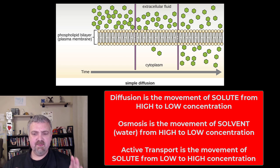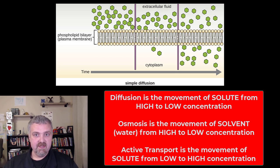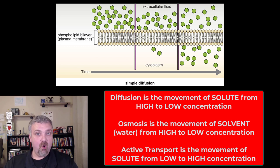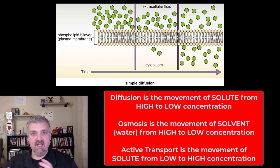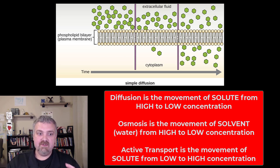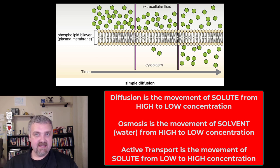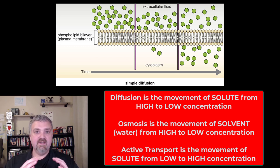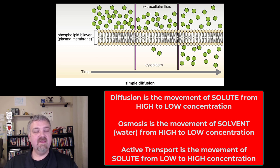I like to put them in context by talking about them amongst each other. Diffusion is when you move solutes from an area of high to low concentration. Osmosis is when you move water, which is the solvent, from a high to low concentration — or the simplest way to think about osmosis is water following solutes. And active transport is going to move solutes against the concentration gradient, from an area of low concentration to high.